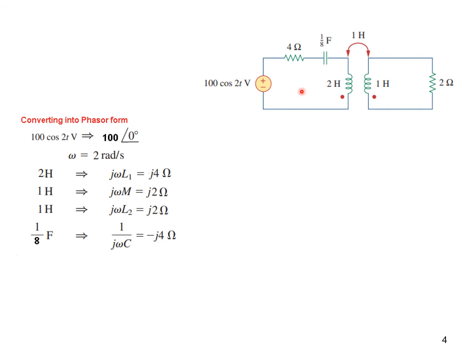Convert the circuit into phasor domain. So 100 cos 2t volt will be 100 at 0 degrees. From here, omega t, omega is 2 radians. And 2 H, 1 H, and 1 H, we just multiply by j omega. Remember omega is 2. So 2 into 2 will be j4, 2 into 1 is j2, 2 into 1 is j2. And similarly for capacitor, we will use this formula. So plugging in the value of 1/8 here and 2 for omega, we get this answer: minus j4.